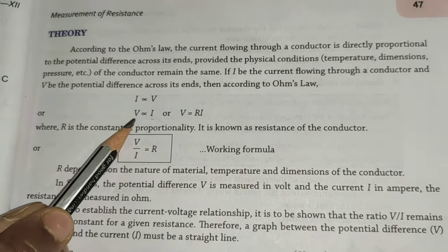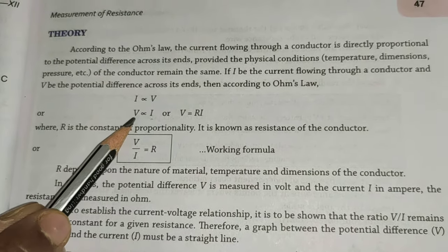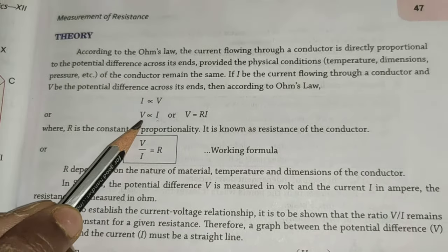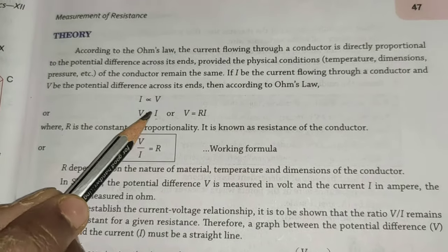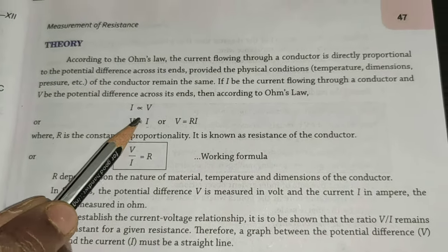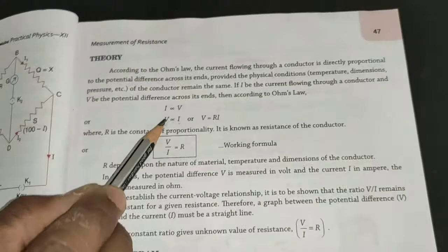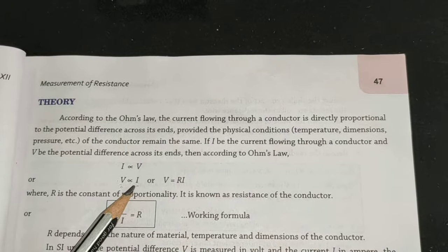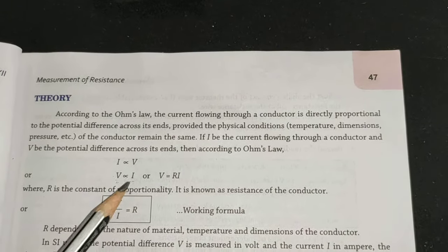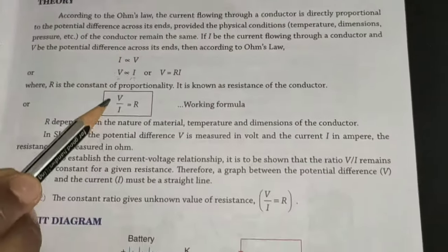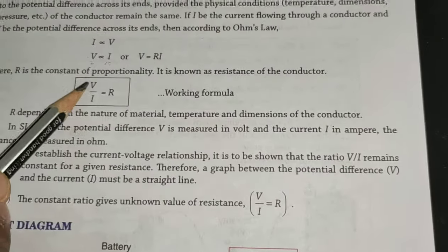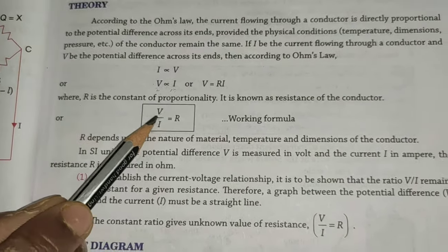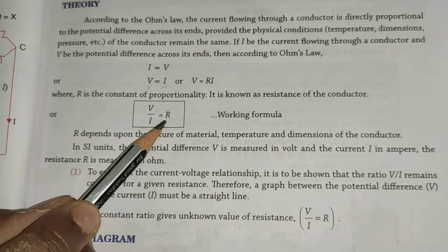As long as the physical state of a conductor remains constant, the potential difference applied across that conductor is directly proportional to the current flowing through it. So there is a constant quantity between them, as Ohm stated, and that is resistance.